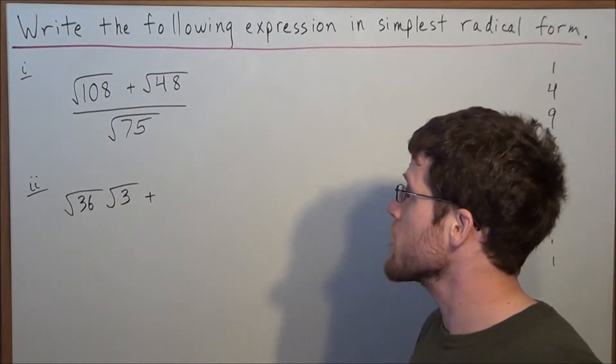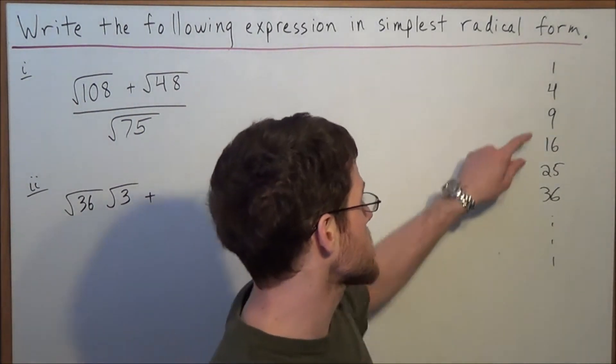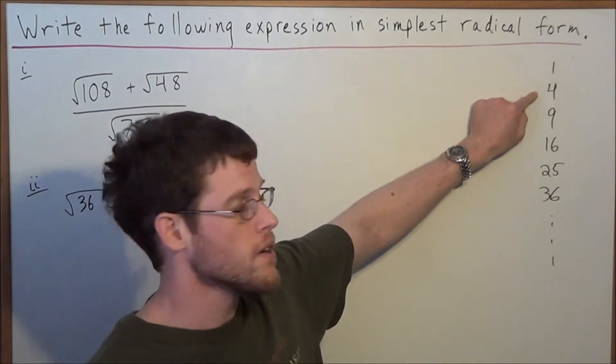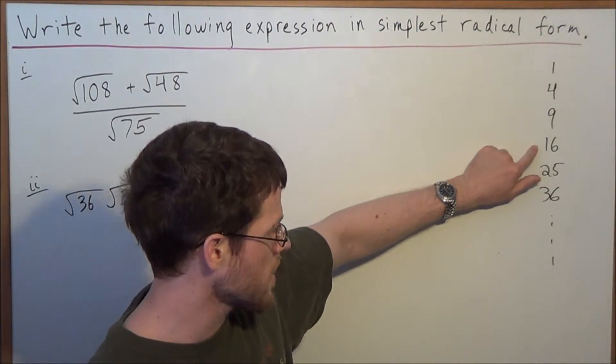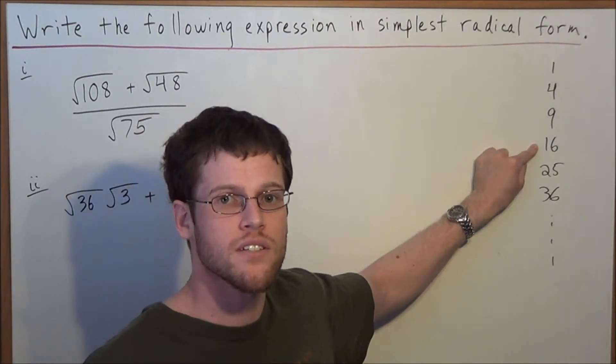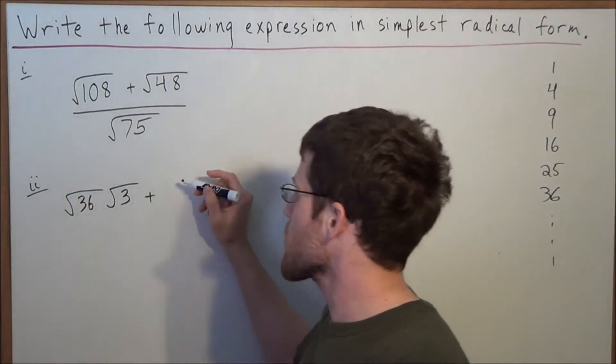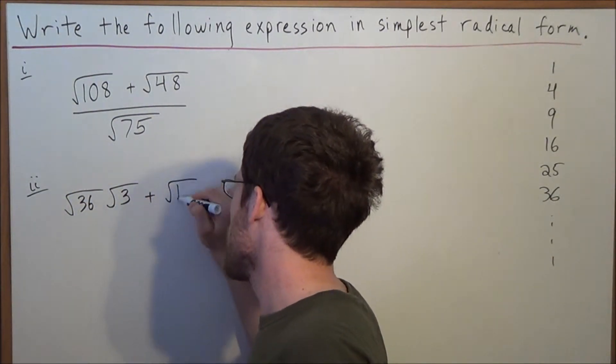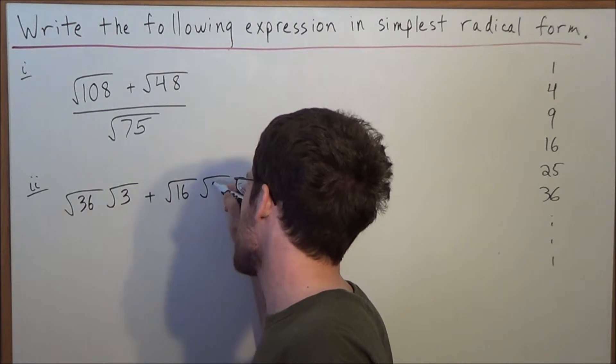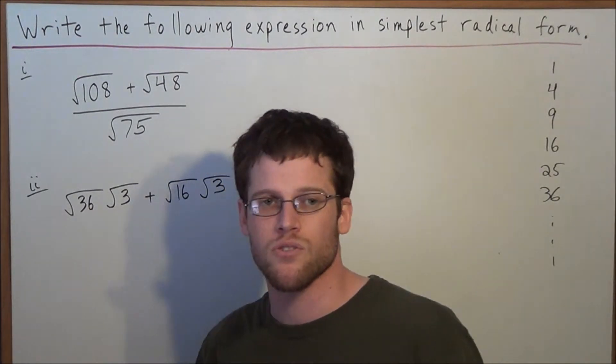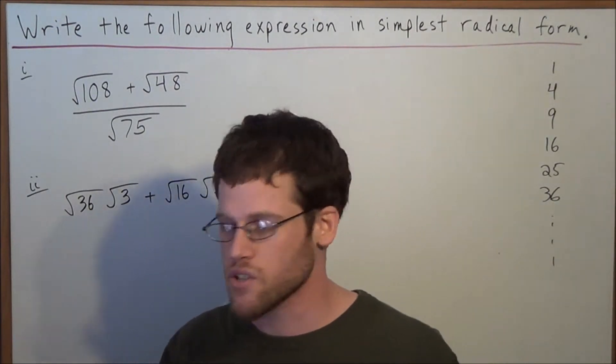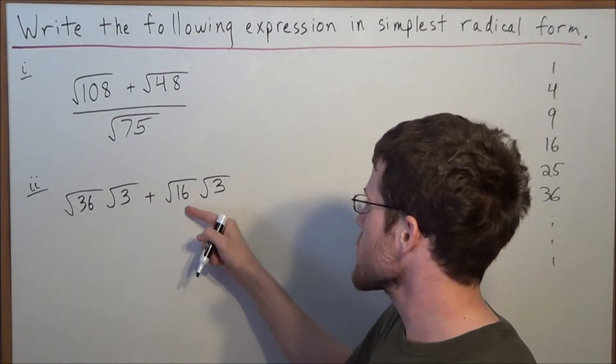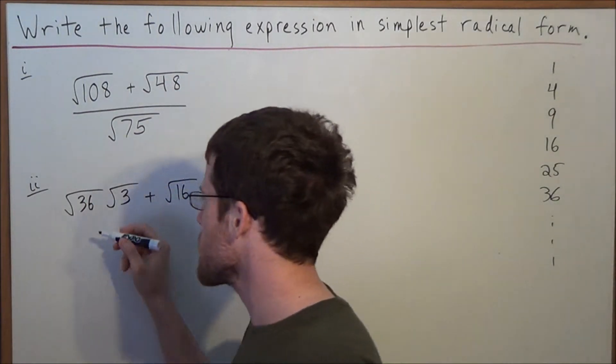But now for 48, we could break down 48. It's tempting to use 4 and 12, but if we look further down the list, we'll see that 48 could be broken down as 16 times 3. So remember, the goal for these problems is to find the biggest perfect square factor because it allows you to simplify in fewer steps. So you could even check 16 times 3 will bring you back to 48.